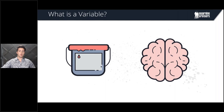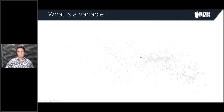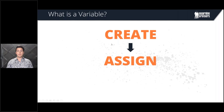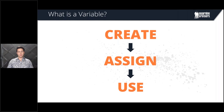When you store information there's a lot of things you can do with it. Working with variables is a three-step process. The first step is to create — you have to create the container to put the information in. Once you create that bucket, you have to assign it, because it's pointless if you have a bucket and you're not putting anything in there. The final step is using that variable. It's pointless to put something in a bucket if you're not going to use it later.